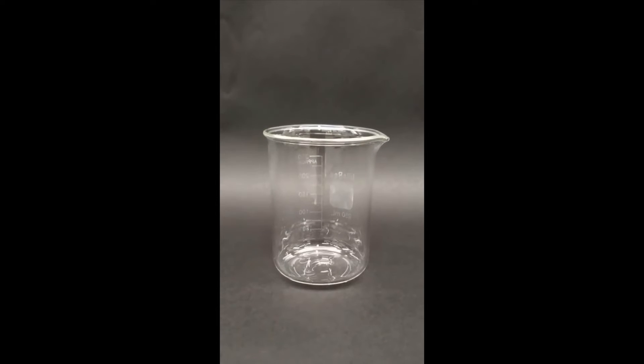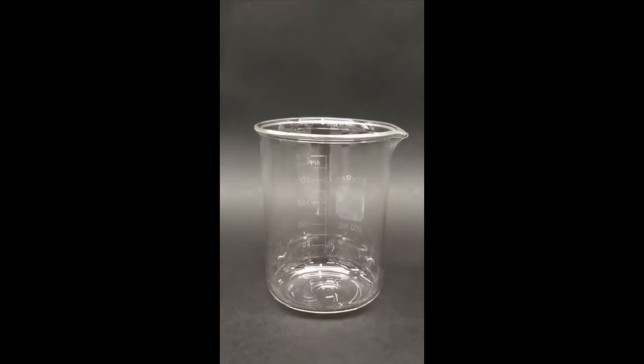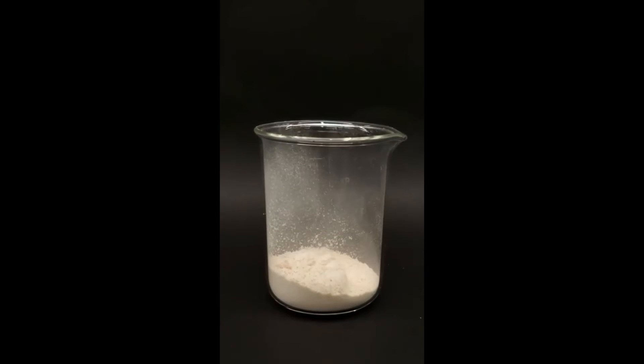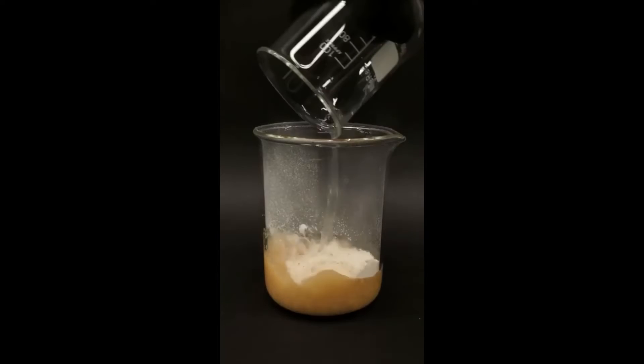So today I'm going to be making some fireballs. To do this, I have to start with some white powder called calcium acetate. Now I have to add some water and dissolve it.